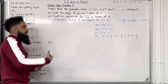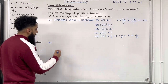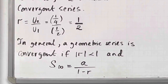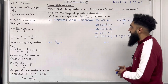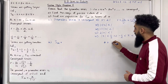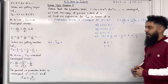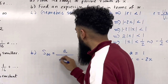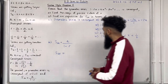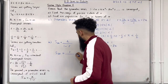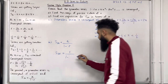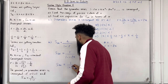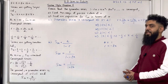In part B we want to find an expression for S infinity in terms of x. S infinity is given by a divided by 1 minus r. Here a, the first term, is 1, and r, the common ratio, is minus 2x. Substituting: S infinity equals 1 divided by 1 minus (minus 2x). The two negatives become positive, so S infinity equals 1 over 1 + 2x. That is the expression for S infinity in terms of x.